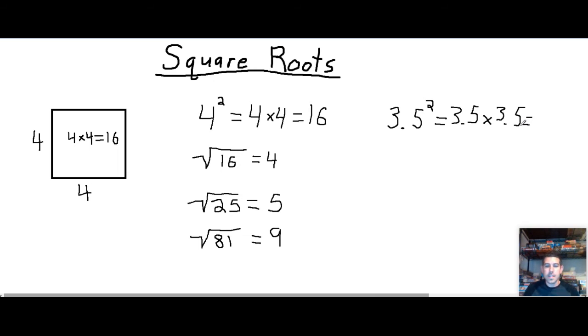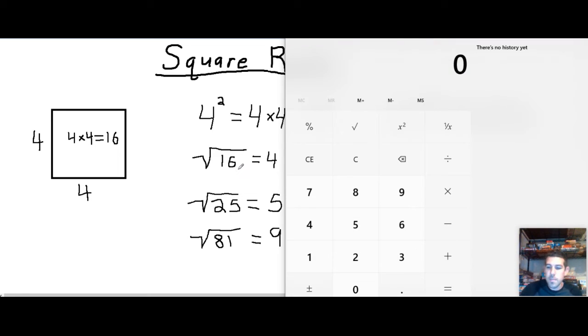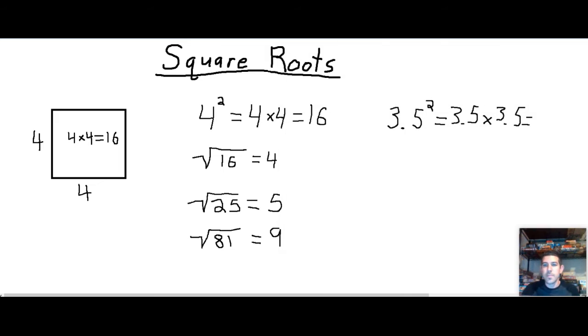Well, that's not going to be a nice easy number. In fact, I'm going to use my calculator to even see what that makes. 3.5 times 3.5 makes 12.25.